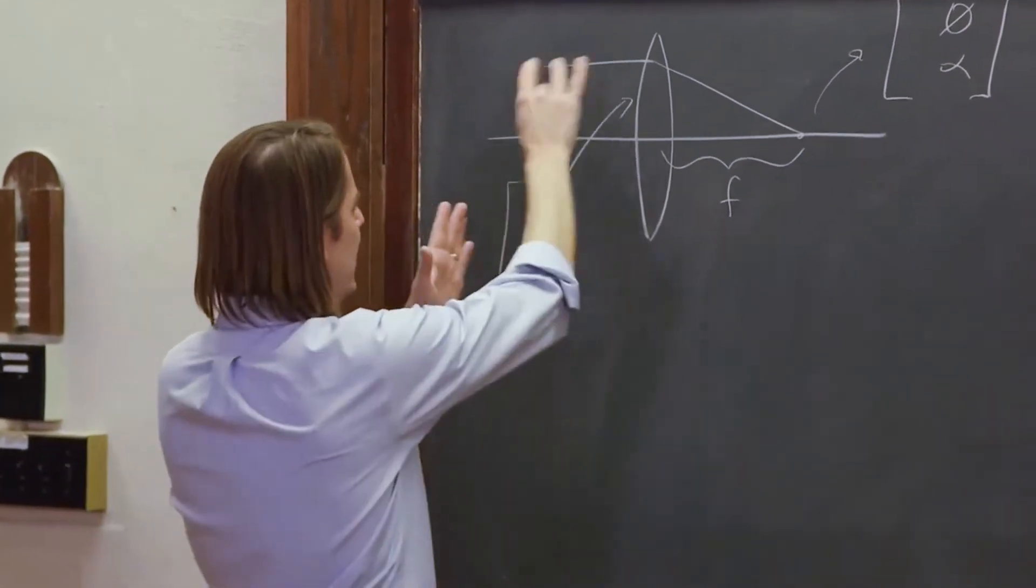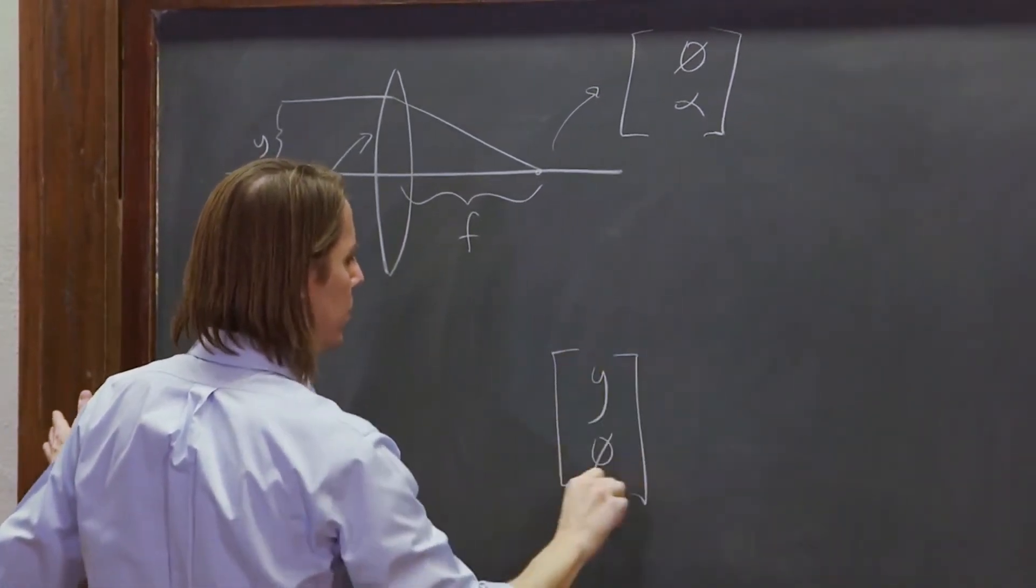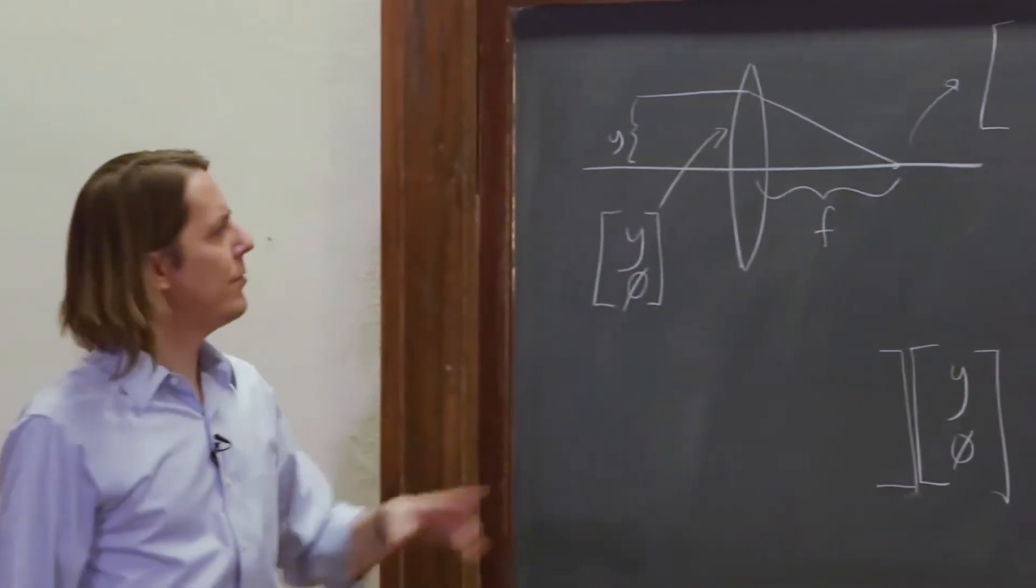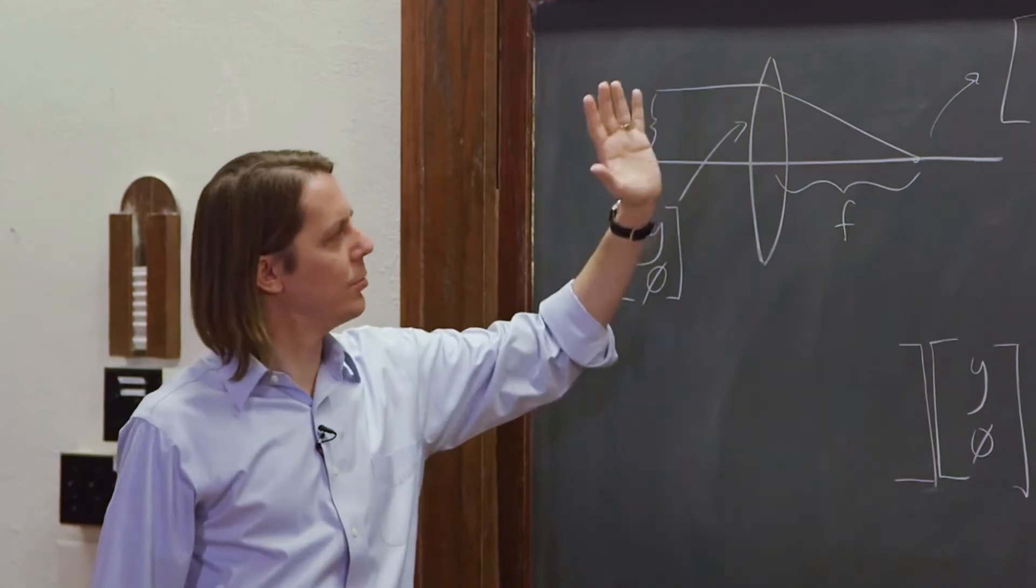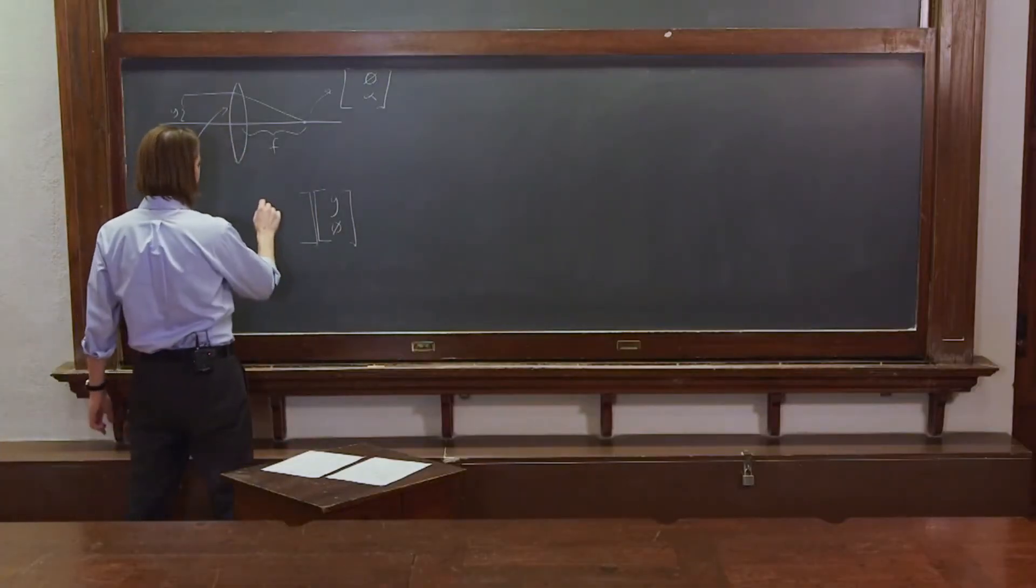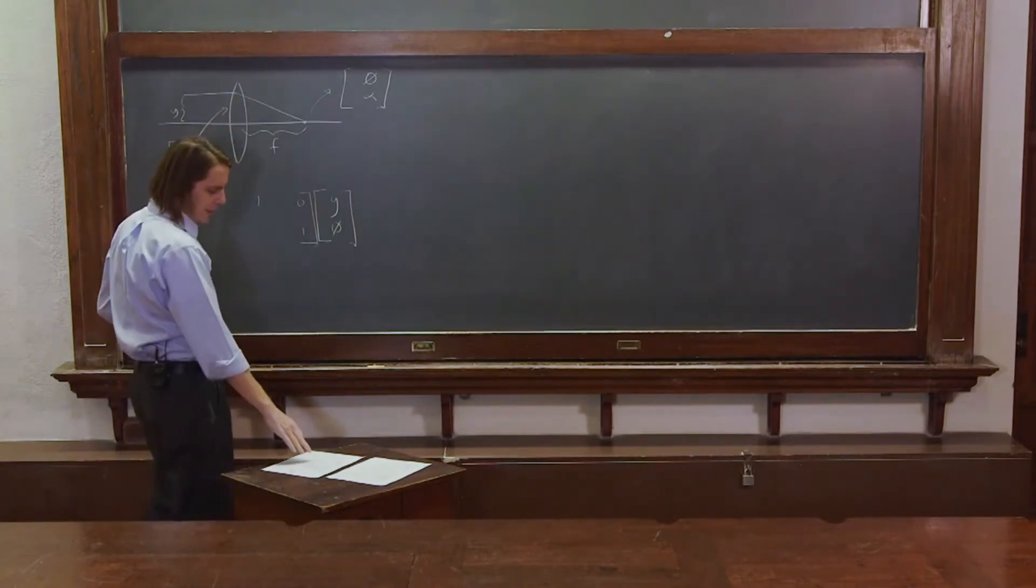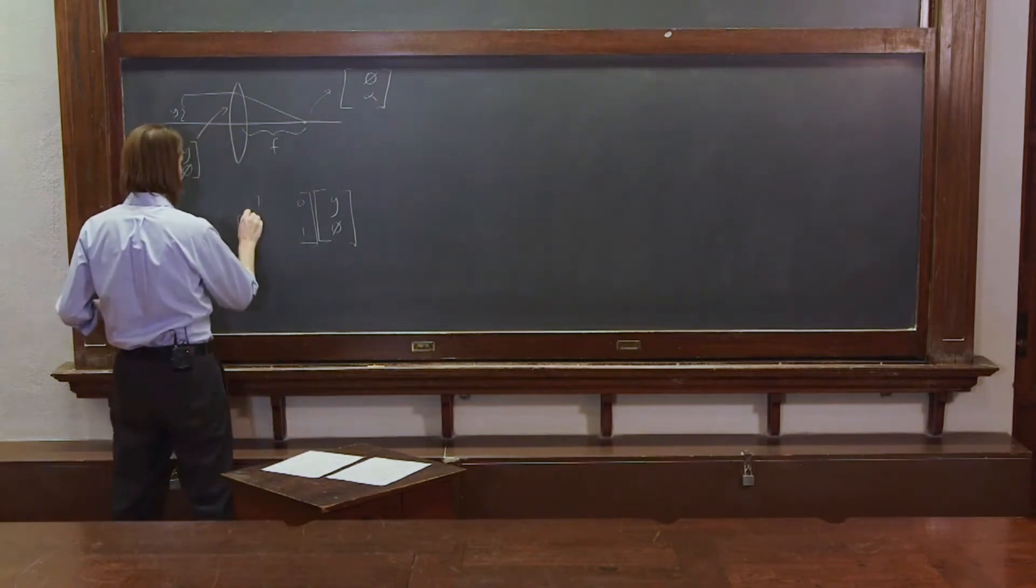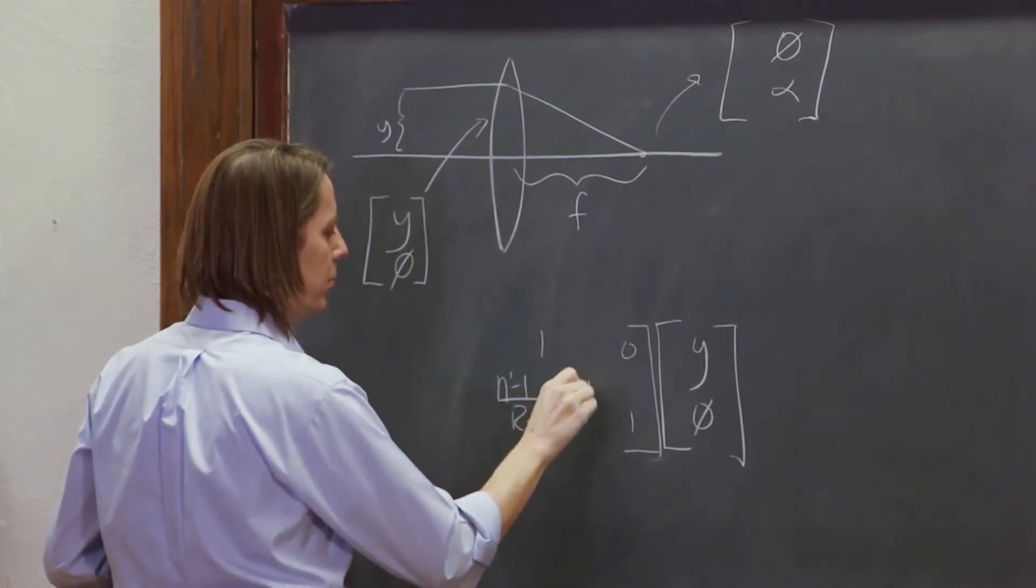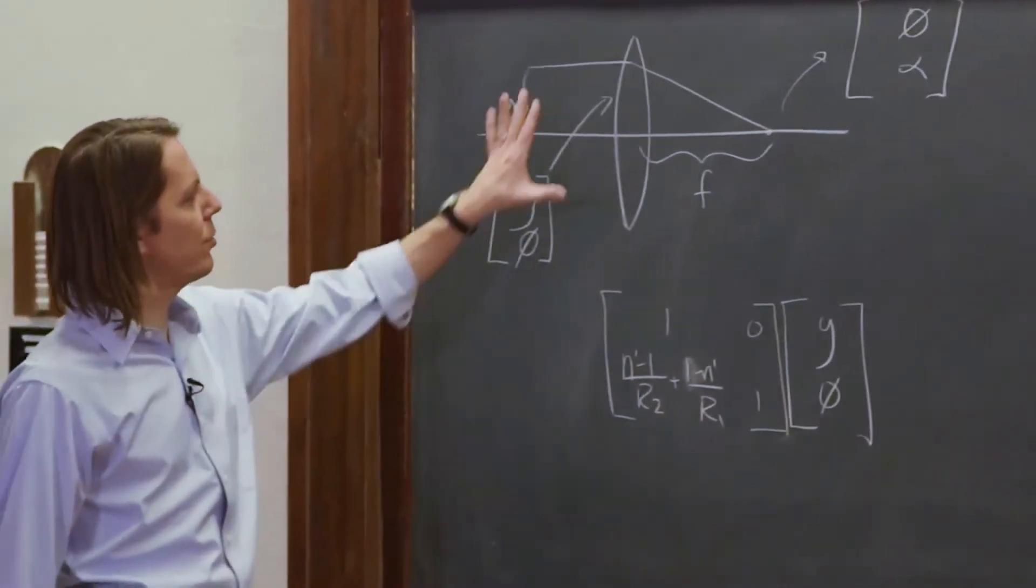We just have to apply our matrices and then see if they give the right answer. First we have light in the state y, 0, and the first thing that happens to it is that it is refracted at this interface. So we're not going to propagate to it, we're just going to start at that interface. Based on our previous expression, that's going to be 1, 0, 1 down here. And here we had n prime minus 1 over r2 plus 1 minus n prime over r1.